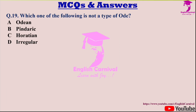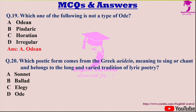Question nineteen: Which one of the following is not a type of ode? Options are A: Odean; B: Pindaric; C: Horatian; and D: Irregular. The correct answer is A — Odean is not a type of ode.